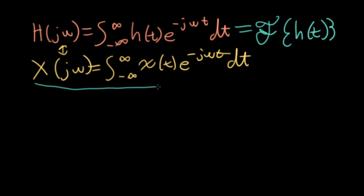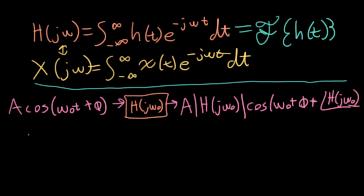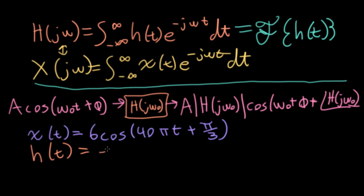So let's do a particular example using this cosine in cosine out property we just derived. Remember the general idea: if we have a cosine omega naught t plus phi going into the system, then the amplitude of the wave A gets multiplied by the frequency response's magnitude evaluated at omega naught, and we add to the phase the angle of the frequency response evaluated at the frequency going in. So let's do an example. Suppose the input to the system is 6 cosine 40 pi t plus pi over 3.